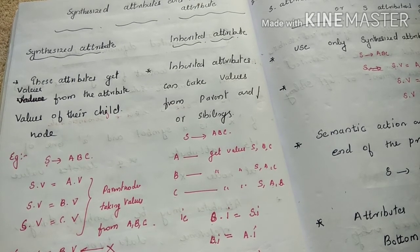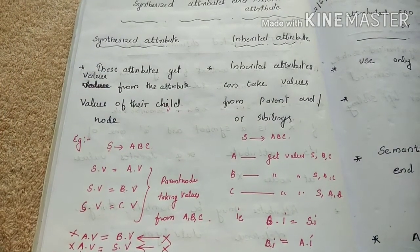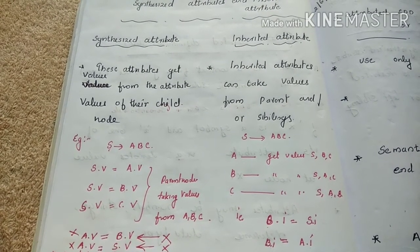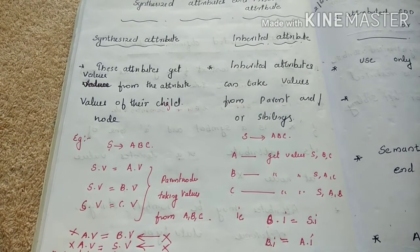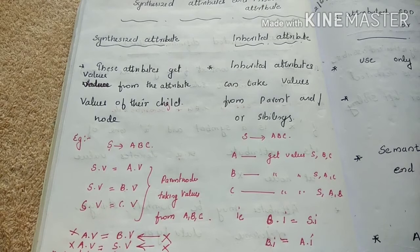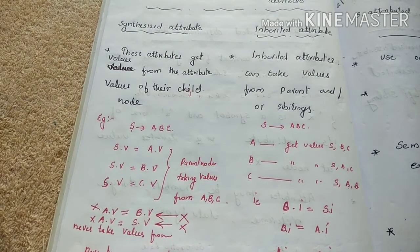To sum up: Synthesized Attribute just receives a value from its children. In contrast, Inherited Attribute receives a value from its parents or its siblings. So Inherited receives from parent or siblings, while Synthesized receives only from children. These are the two examples of Inherited Attribute and Synthesized Attribute. Hope you all understand what is Synthesized and what is Inherited. Thank you.